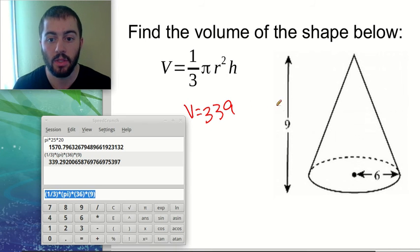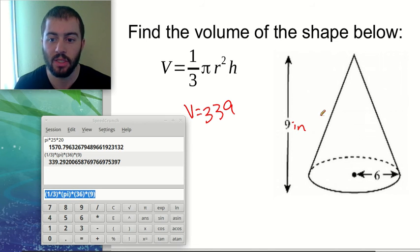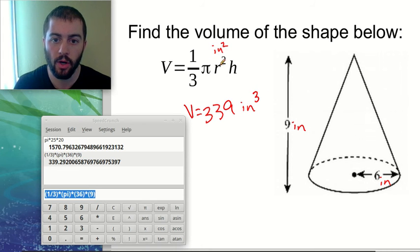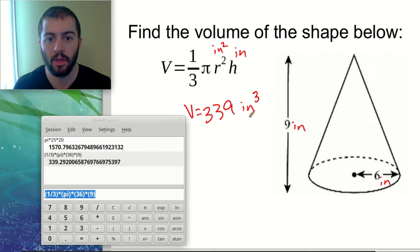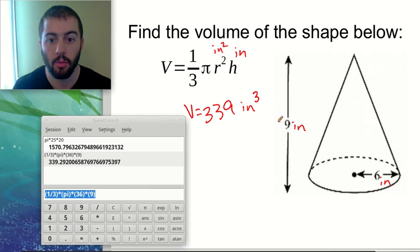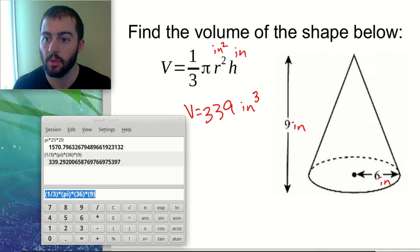The units here — if we use inches for both the radius and height — we'd have inches squared when we square the radius and then inches for the height, so we end up with inches cubed. The final answer would be 339 inches cubed.